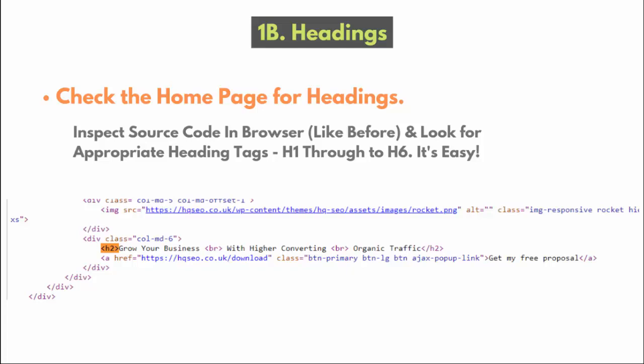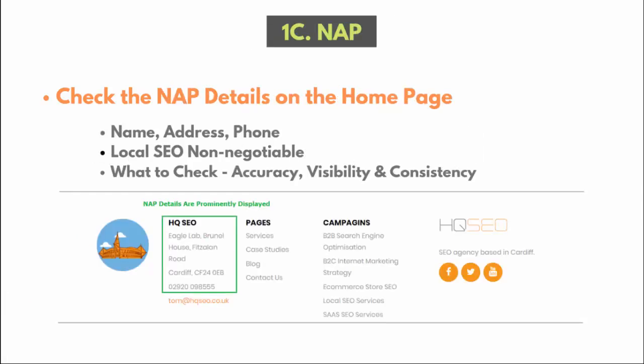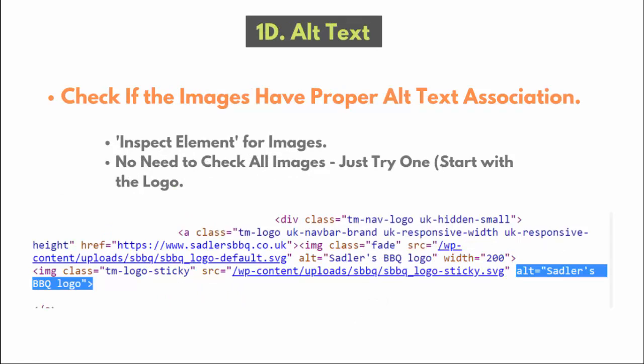Check H2 tags — do you have secondary keywords within them? If not, why not? Also check NAP: name, address, and phone number. Here's our example — Eagle Labs, Fitzhammons Road Cardiff CF24 0EB, plus the phone number. Make sure you have the business name, address, and phone in the correct schema markup. Check this — if you don't have it, add it. It needs to be accurate, visible, and consistent across all your web properties.